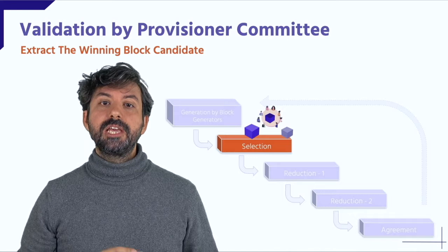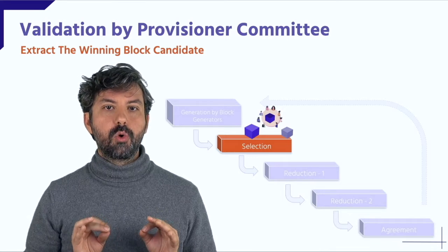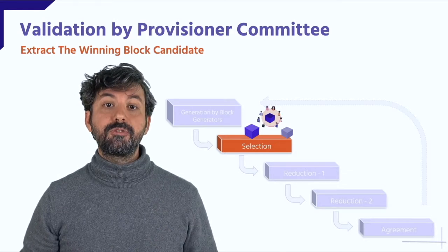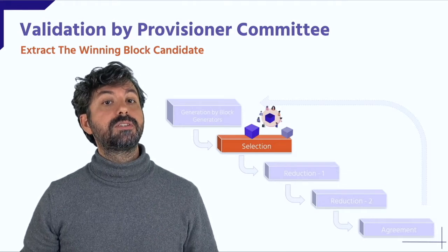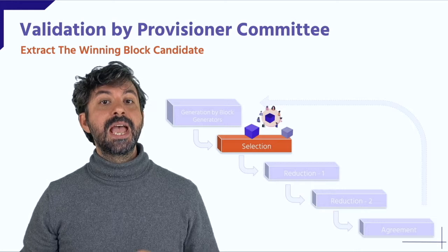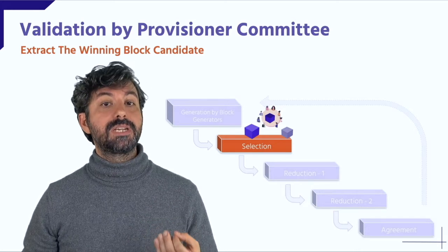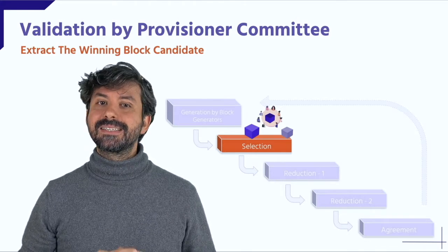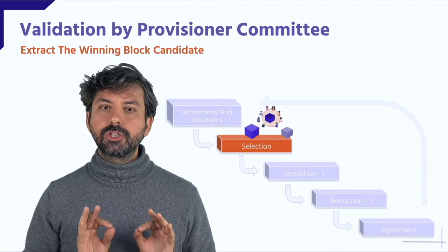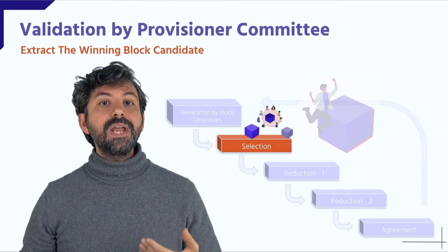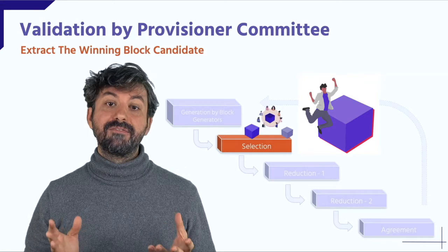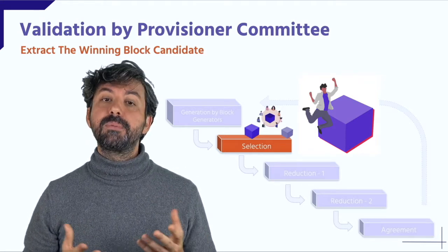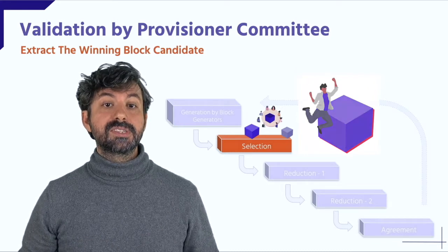The validation begins with the selection phase. A node extracted to be in the committee during the selection phase picks the candidate block associated to the highest score it sees, and at the end of that phase it propagates its pick to the network. The selection procedure is effectively an extraction of the winning candidate. The winning block generator — the one with the highest score and valid proof — is chosen by the committee and is considered the leader in PBFT terms for the current iteration of the consensus.